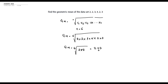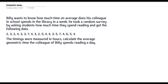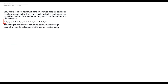Now let's get the geometric mean when our dataset is grouped based on score. The question says Billy wants to know how much time on average his colleagues spend in the library in a week. He asked students how many hours they spend reading and got a dataset including values like 2, 3, 2, 4, 3, 3, 7, and so on. Since this raw dataset is quite large, working with it directly would be tedious, so we sort it by score into a frequency table.